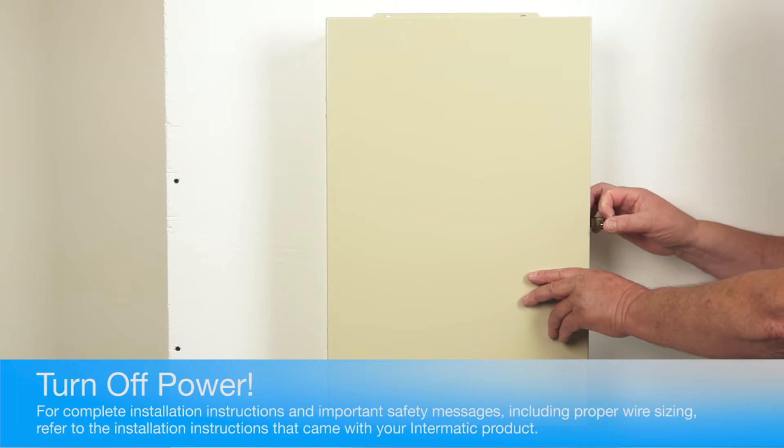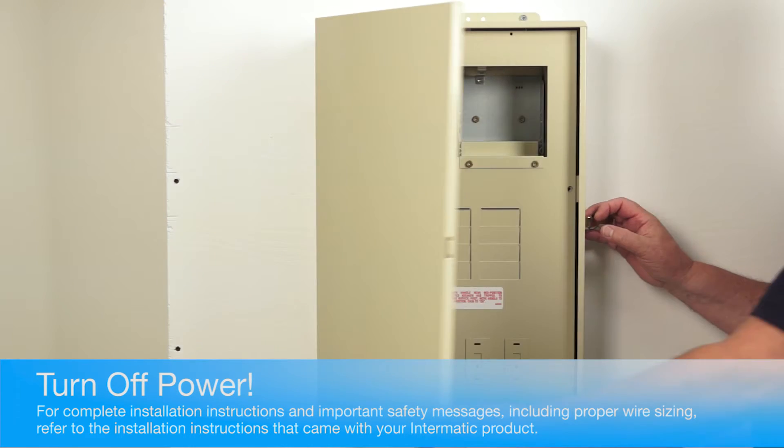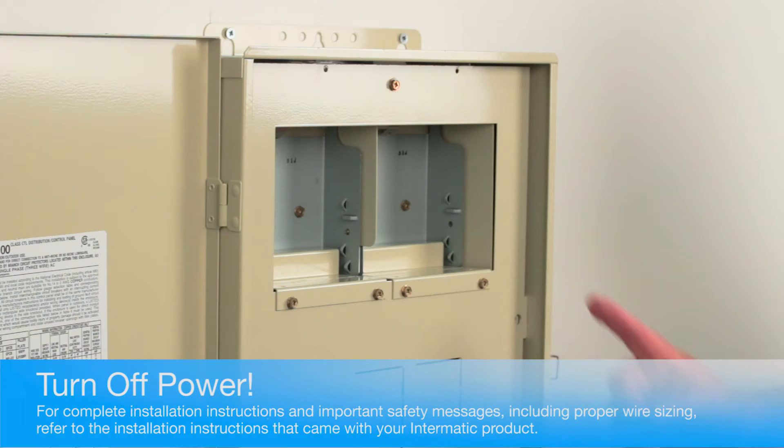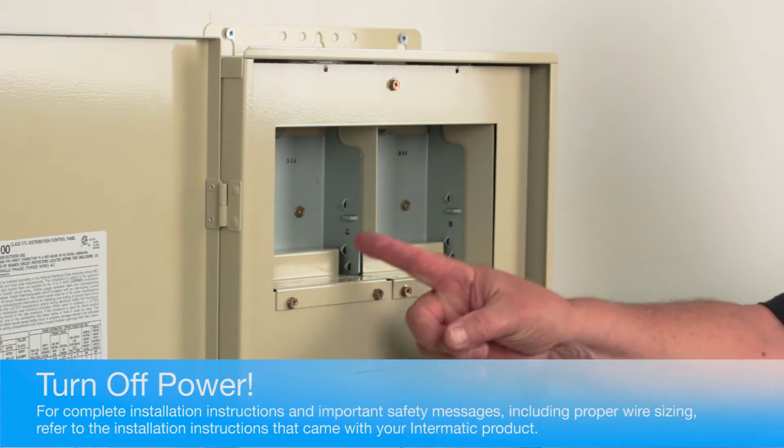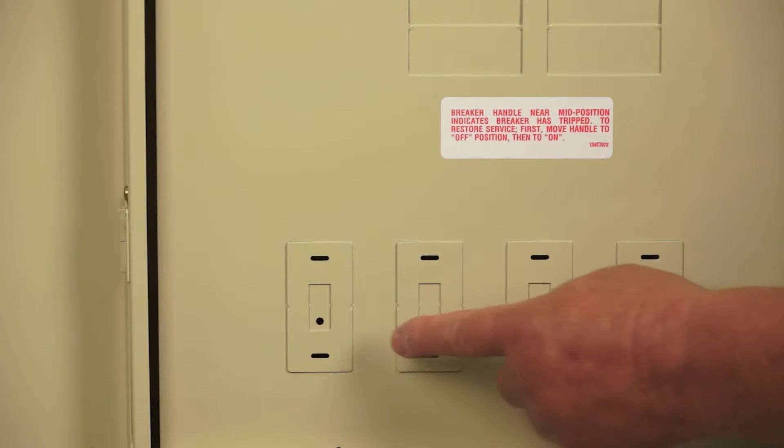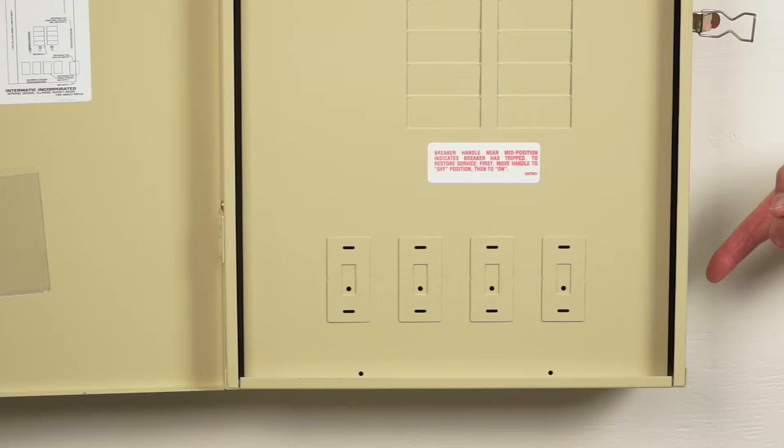We've mounted the PE30,000 load center. Before beginning any wiring, be sure to turn off the power at its source. The load center has two openings for mechanisms, eight breaker knockouts, four bottom knockouts for switches or receptacles, and one side knockout.